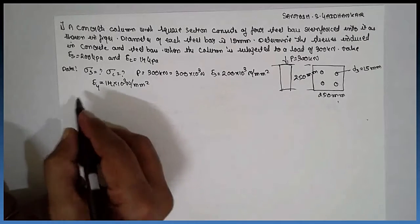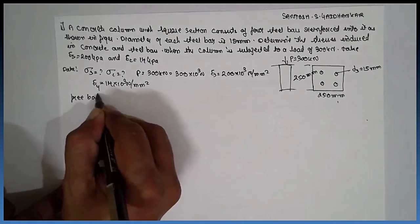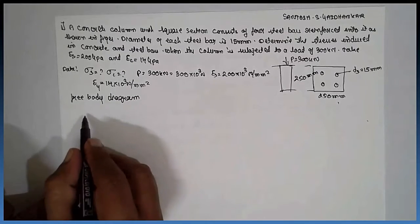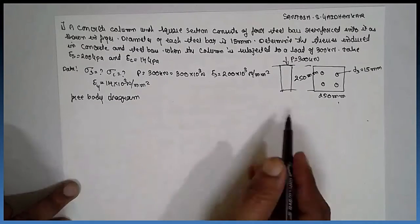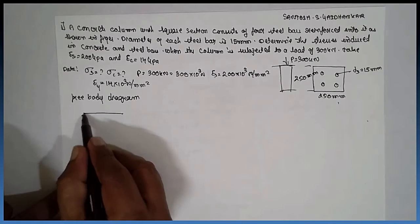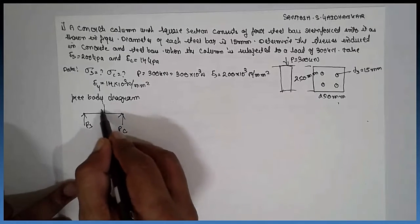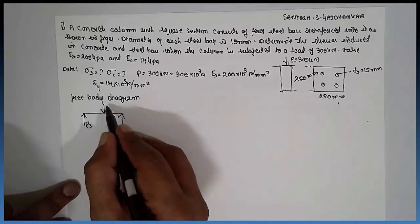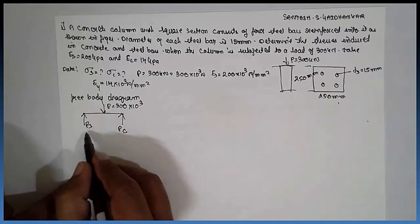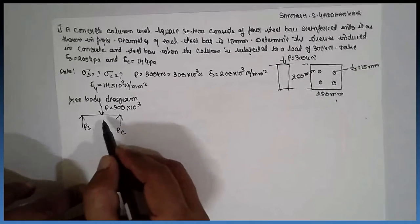Now I will draw the free body diagram. The concrete and steel will act upward as PS and PC, and the load is acting downward. P equals 300 times 10 to the power 3. This is the free body diagram.